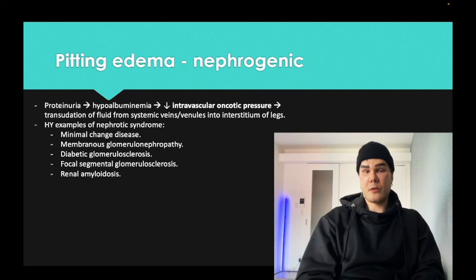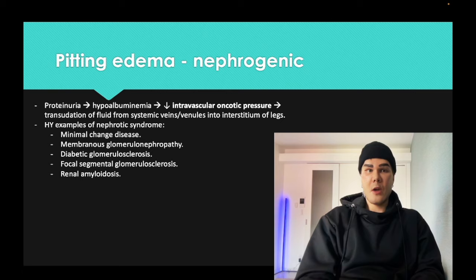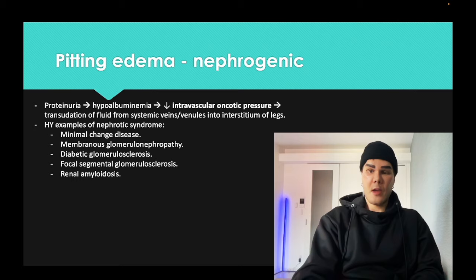Renal amyloidosis 9 out of 10 times is multiple myeloma. Multiple myeloma plasma cells produce immunoglobulin light chains, Kappa and Lambda. Amyloidosis is proteins depositing where they shouldn't — those immunoglobulins fly through the heart causing cardiac amyloidosis and diastolic dysfunction, and through the kidney causing Bence-Jones proteinuria. They deposit in the renal parenchyma causing renal amyloidosis and nephrotic syndrome. It shows apple-green birefringence on Congo red stain.